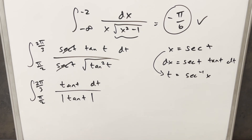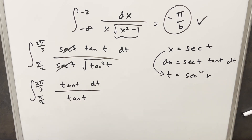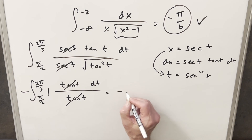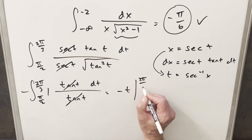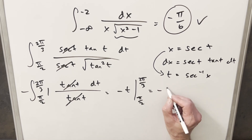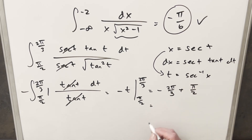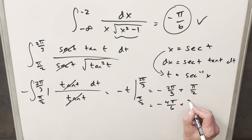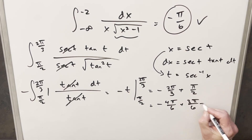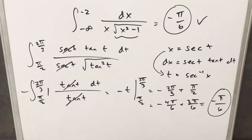This time I'll keep the absolute value. In the second quadrant tangent is always negative, so dropping the absolute value requires bringing a minus sign out front. The tangents then cancel and we integrate minus one, giving minus t evaluated from pi over two to two pi over three. Plugging in: minus two pi over three plus pi over two. With a common denominator: minus four pi over six plus three pi over six gives minus pi over six. So yes, we can define this in the second quadrant — we just must remember the absolute value and that minus sign.